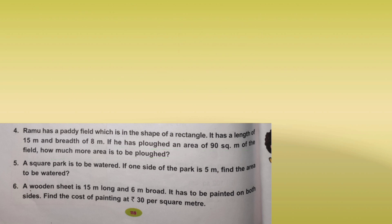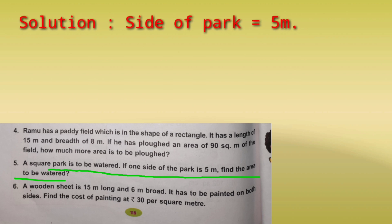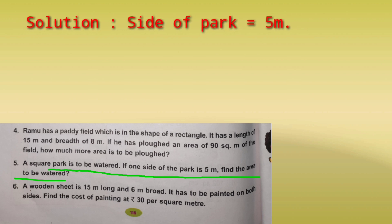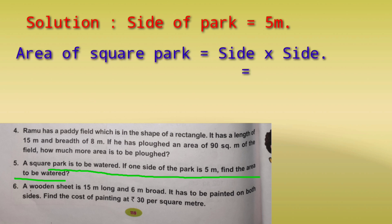Question 5: A square park is to be watered. One side of the park is 5 meters. We need to find how much area needs to be watered. The side is given, so we can find the area. Area of square park equals side multiplied by side, which is 5 multiplied by 5, equals 25 square meters. That is the area to be watered.